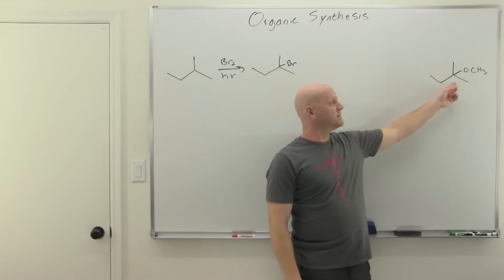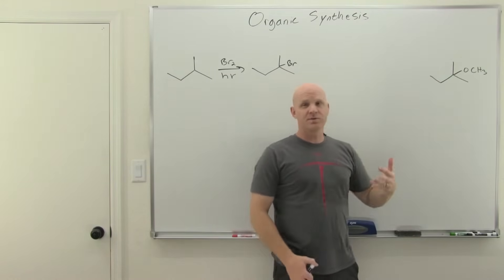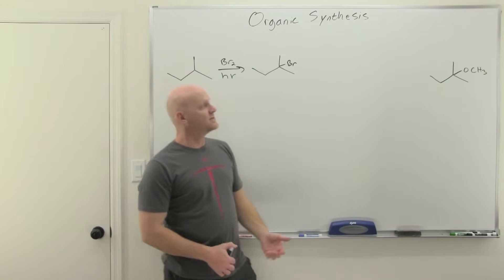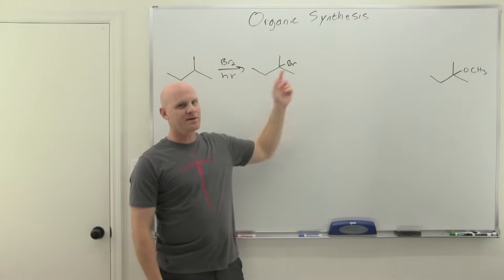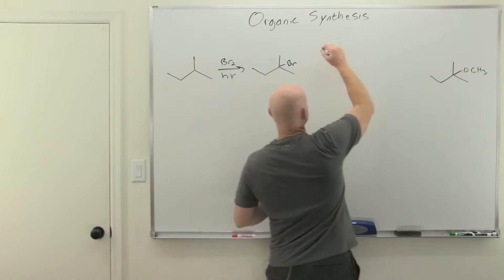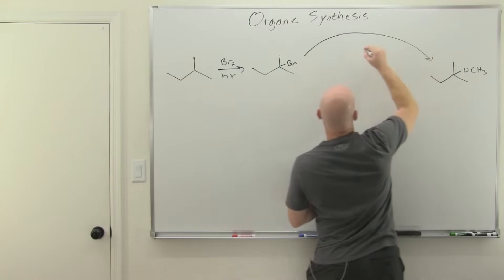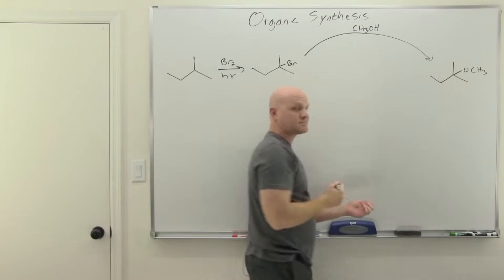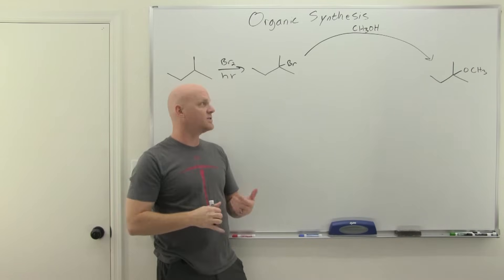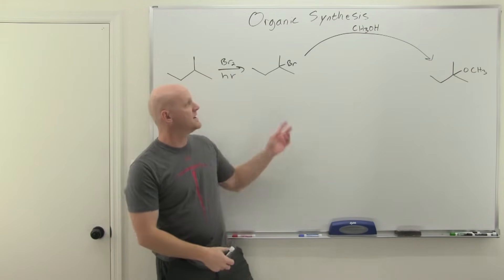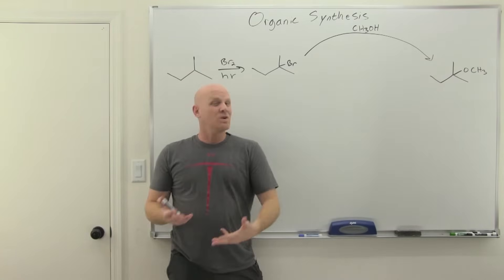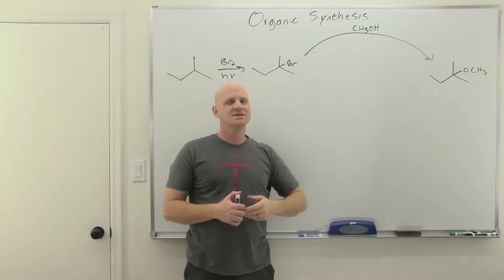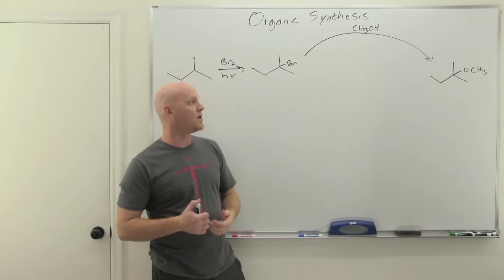From here, we're going to work this backwards. So the question is, how do we make this lovely species? One possibility here would be SN1. To do SN1, you'd need a good leaving group. So to get this particular OCH3, you'd need to use methanol. You'd heat it up a good amount. But the problem is, the hotter you heat it, the more elimination starts happening as well. So this is your SN1 product, but E1's going to compete with it, and you'll get an alkene as well. Even though this could potentially work, and it would be a lovely two-step synthesis, the yield is not going to be great, and we should consider all our options here.